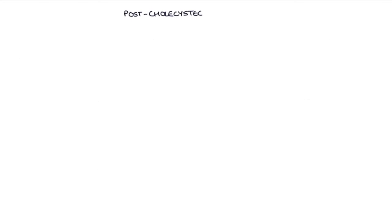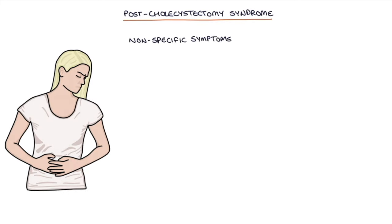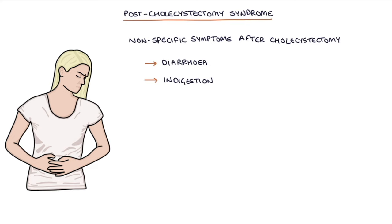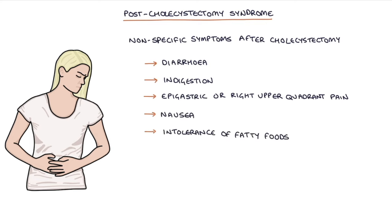Post-cholecystectomy syndrome involves a group of non-specific symptoms that can occur after a cholecystectomy. These symptoms may be caused by changes in the flow of bile after removal of the gallbladder. Symptoms often improve with time and include diarrhoea, indigestion, epigastric or right upper quadrant pain and discomfort, nausea, intolerance of fatty foods, and flatulence.